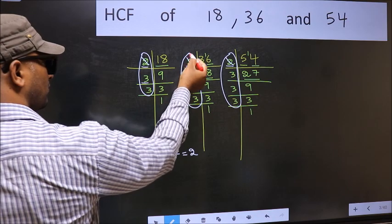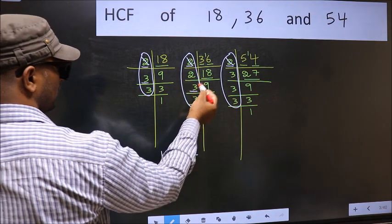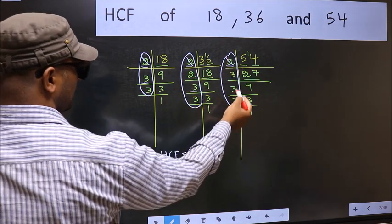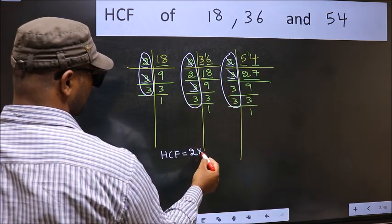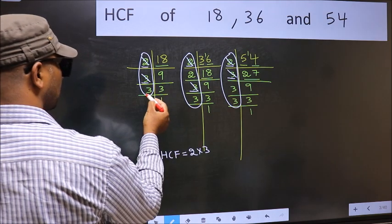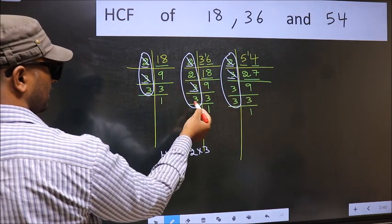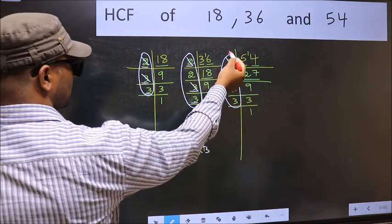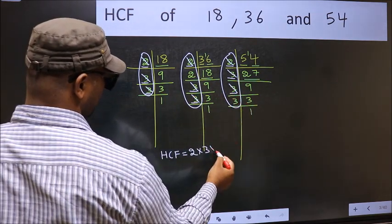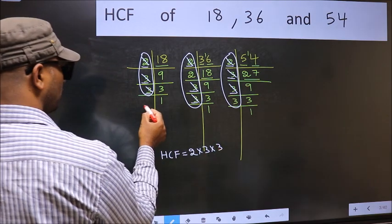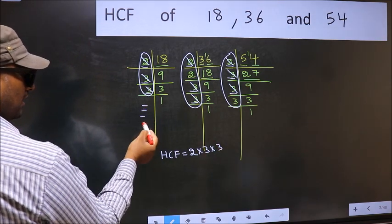Next number 3. Do we have 3 here? Yes. Go to the next place. Do we have 3 here? Yes. So cut 3 right here.